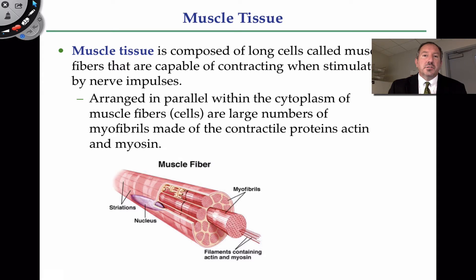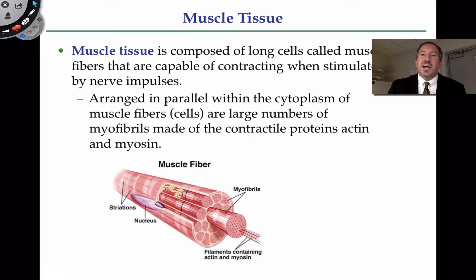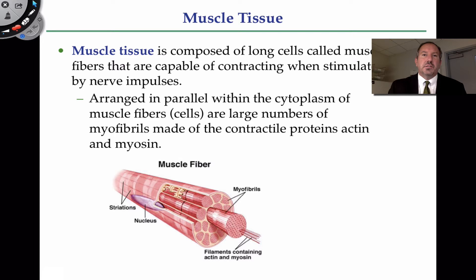One thing about muscle tissue is that some muscles in our body are under our control — voluntary control. We can consciously contract some muscle tissue, like motion, talking, or moving a hand. But other muscle tissue, for example lining the digestive system, squeezes food through what's called the alimentary canal — that's not under our control, that's involuntary. Likewise, the heart, which is mostly muscle, contracts but not voluntarily. So we have muscle under both voluntary and involuntary control.